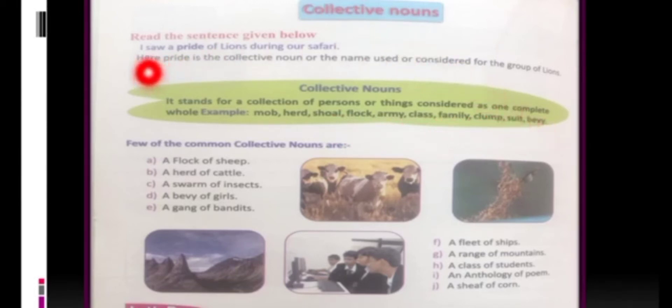Let's read this sentence also. I saw a pride of lions during our safari. Pride of lions. As we know that this is a group of lions. Many lions would be there. But the name given to their group is pride. So, pride is the collective noun.